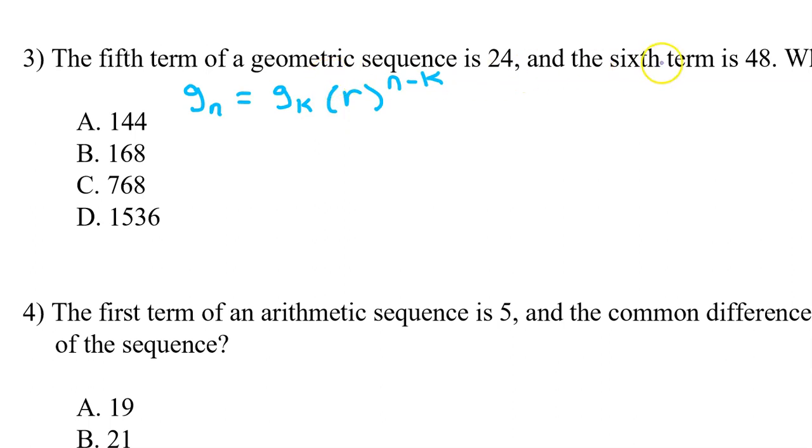When given two terms of a geometric sequence, I always let g_n be the higher index term. So, I'm going to let g_n be the sixth term, and g_k will be the fifth term. In other words, I will put g_6 here, and g_5 here. We can use these two terms to find the common ratio.